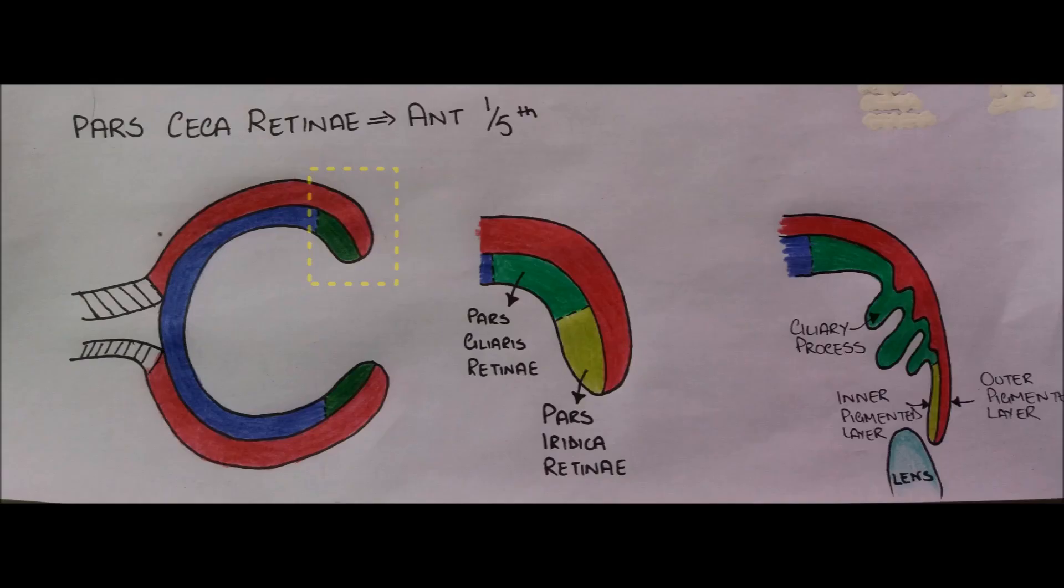So the anterior one-fifth of neural layer called pars cica retinae is further divided into pars ciliaris retinae and pars iridica retinae. The pars ciliaris retinae gives rise to mucosal foldings which form ciliary body. Meanwhile, the pars iridica retinae gives rise to the inner unpigmented layer of iris.